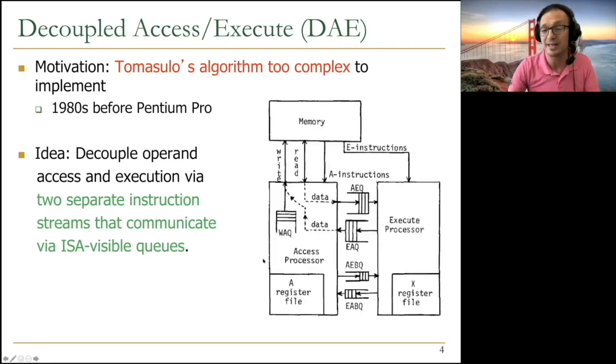Basically, you look like a system decoupled access execute system. You have an access processor and execute processor. Access processor's task is just to get memory data and supply to the execute processor. Execute processor's task is to give the addresses that it needs to the memory processor. And they basically communicate through these queues.